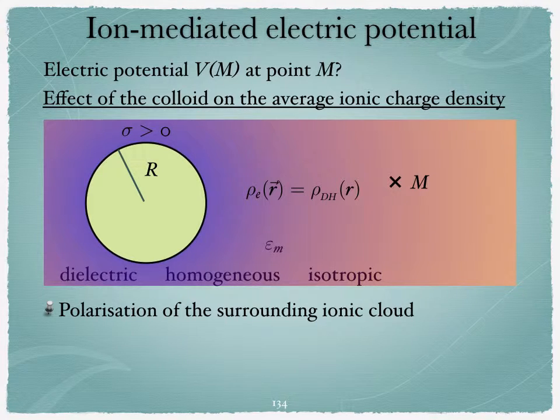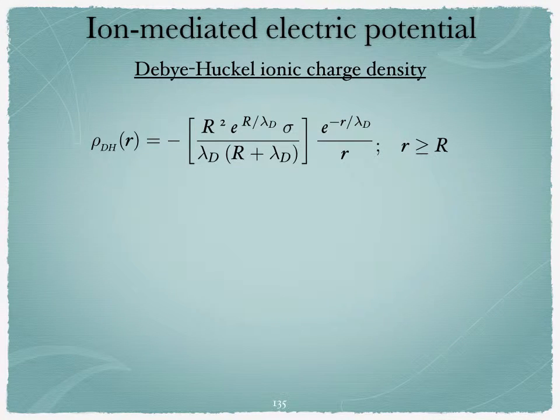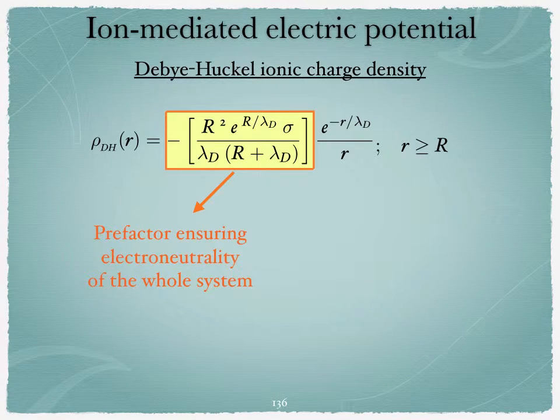Now the thing here is that as you get these things, I've said that the actual distribution, instead of being constant, is equal to rho DH of r, where r here is the radial distance from the center of the colloid. It turns out that this rho DH is the Debye-Huckel charge density. And this Debye-Huckel charge density looks like that - it's a complicated expression for the charge density. But in fact, the only thing that matters here, this term is just a prefactor that ensures electroneutrality of the whole system, colloid plus ions.